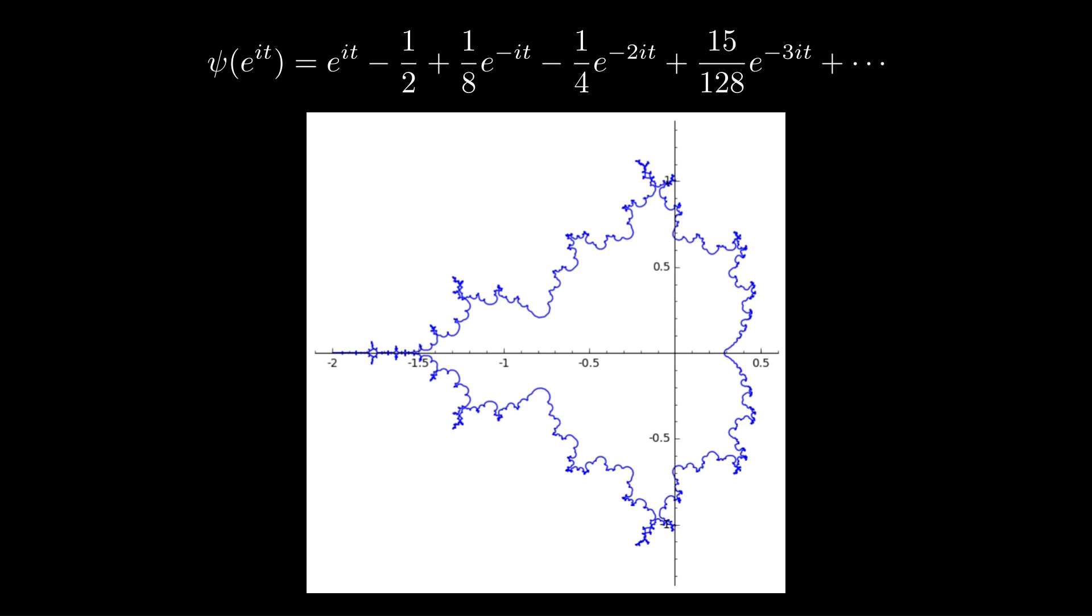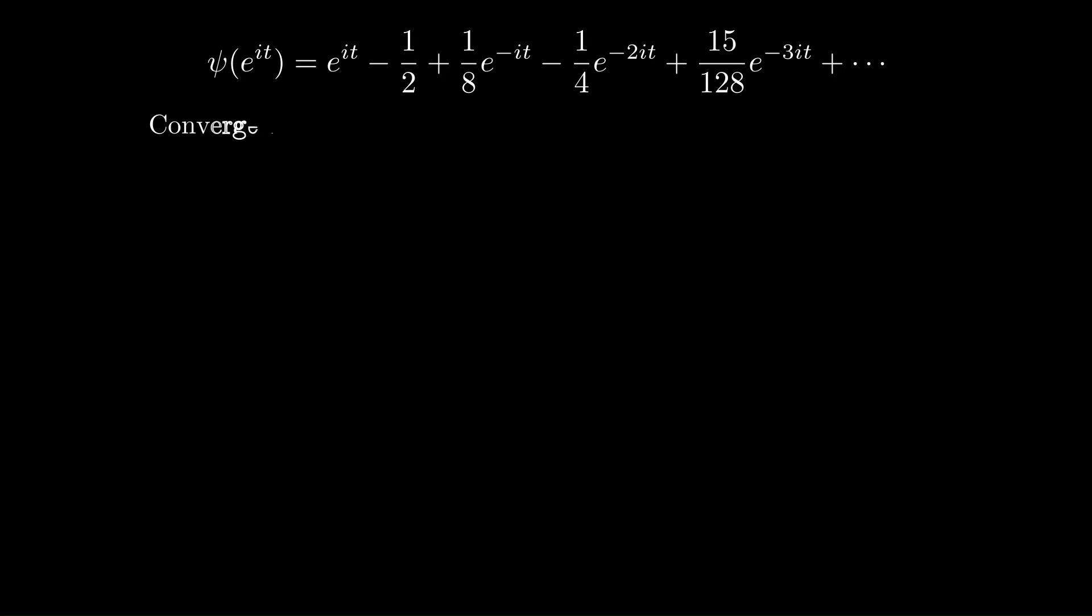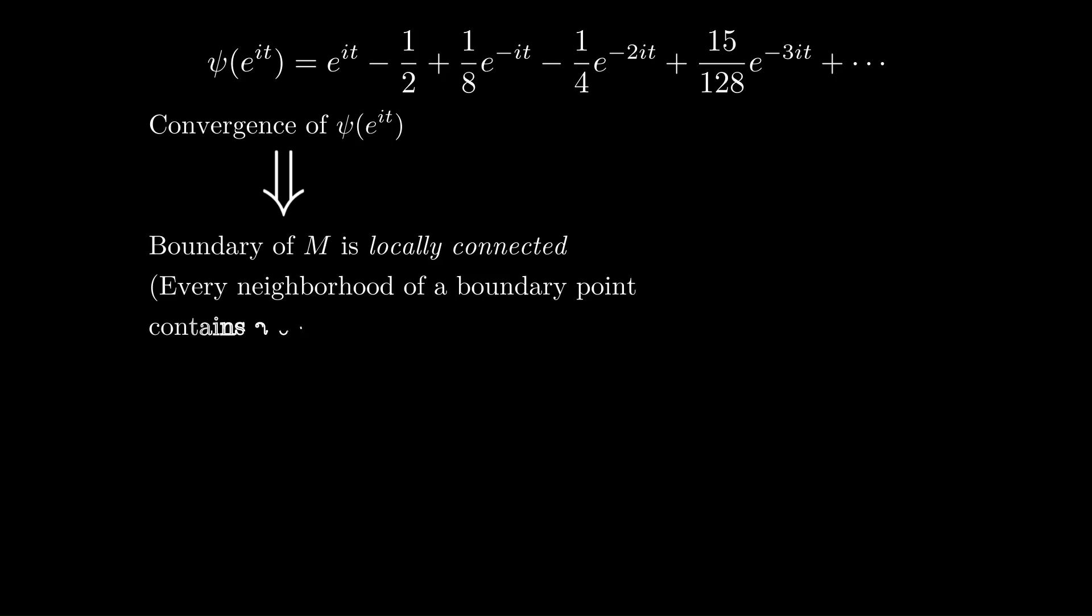Now the convergence of this Fourier series actually implies two of the largest conjectures related to the Mandelbrot set. So if this function converges, it implies that the boundary is locally connected, which very roughly speaking means that the boundary is not too horrible. Locally connected here means that if we take any neighborhood of a point on the boundary, it will always have a smaller neighborhood that's connected. So as we zoom in, it still looks connected.